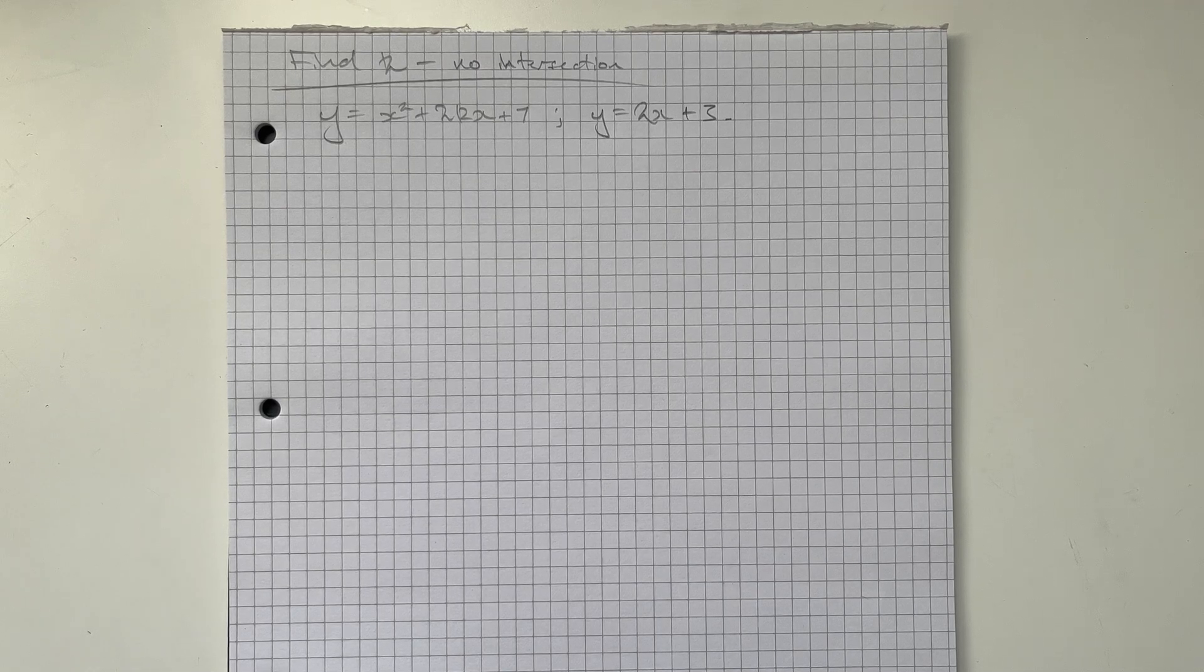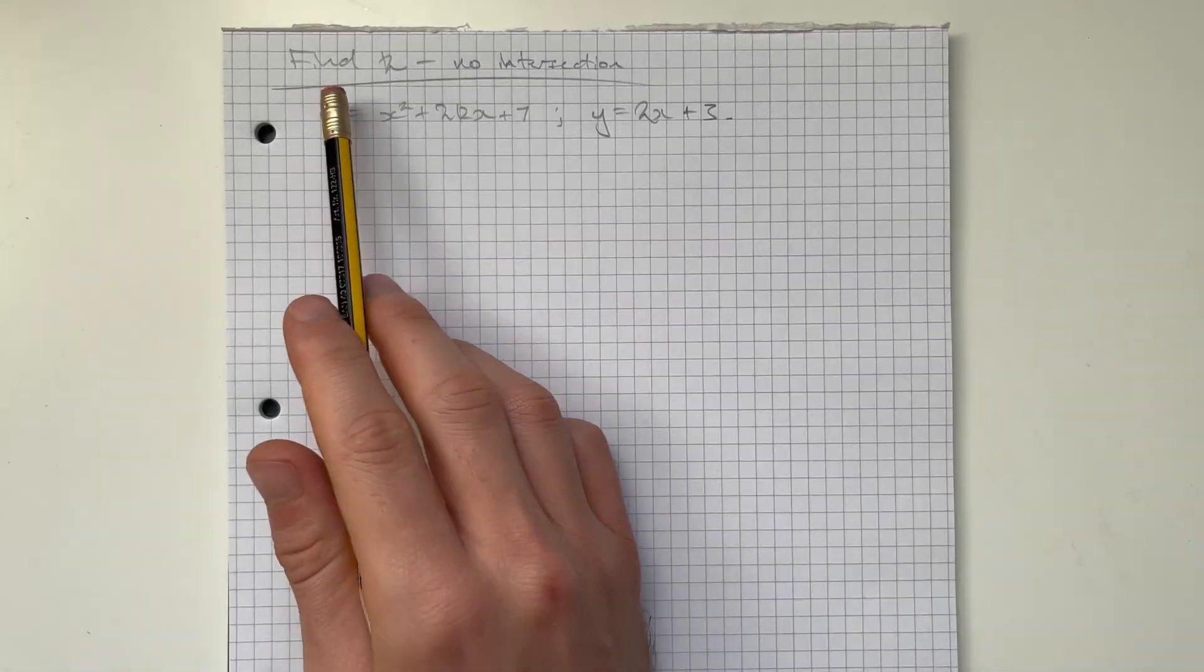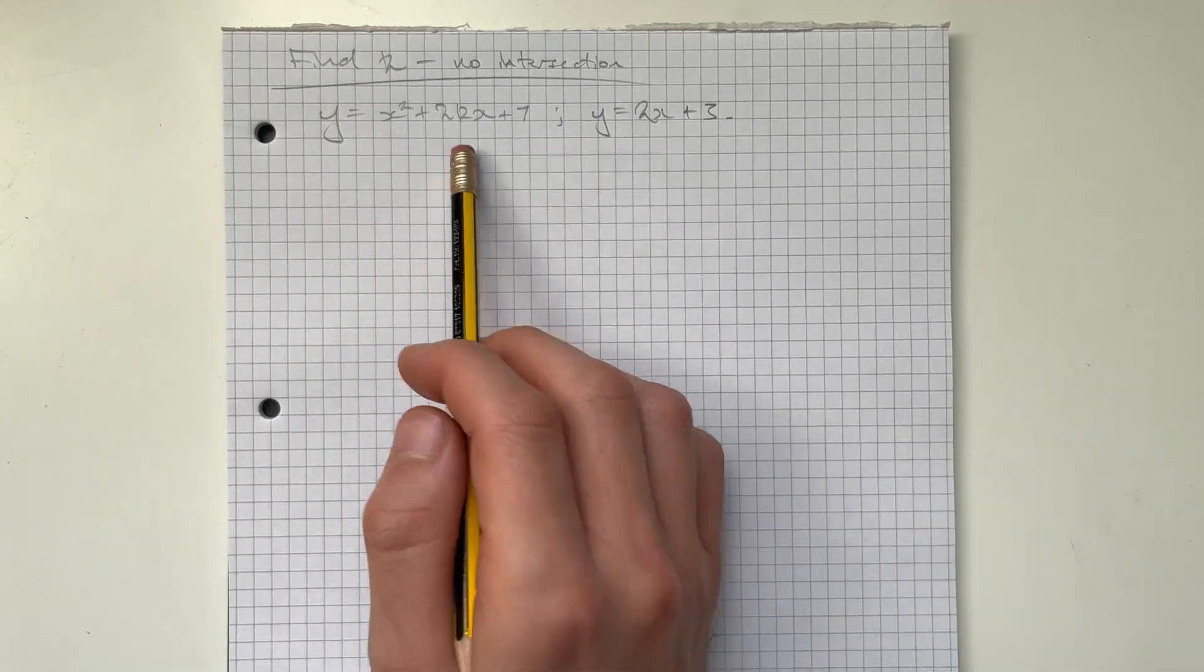Hello, today I'm going to show you this question. So our goal is to find the values of k such that these two lines don't intersect.